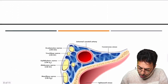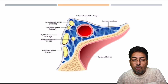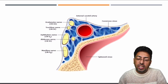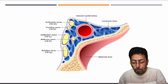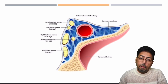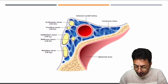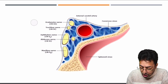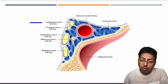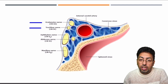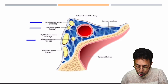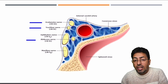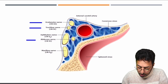Here is a diagram of the cavernous sinus — the blue area represents the cavernous sinus on one side. What makes it surgically and medically important is that multiple nerves lie within its walls. You can see the oculomotor nerve (CN 3) in the lateral wall, followed by the trochlear nerve (CN 4), and the abducens nerve (CN 6).